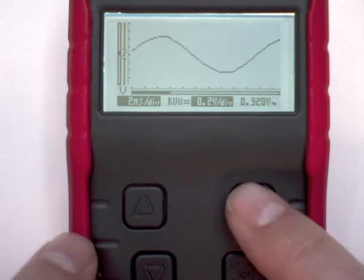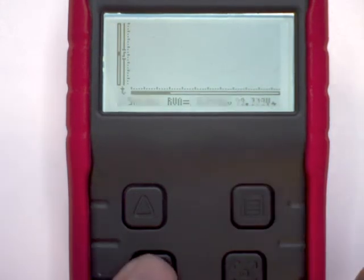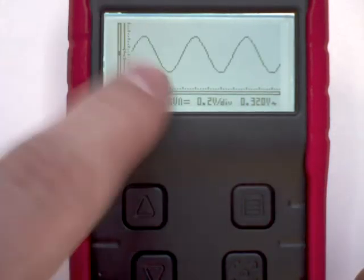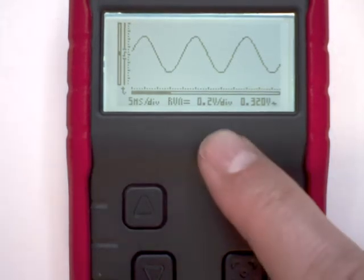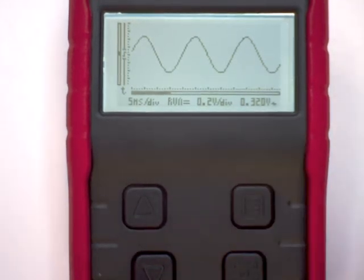Now what we're going to do, we're going to flip it to manual and change the time per division so that we get a little more periods on the screen, like this. The volts per division setting can remain as shown.